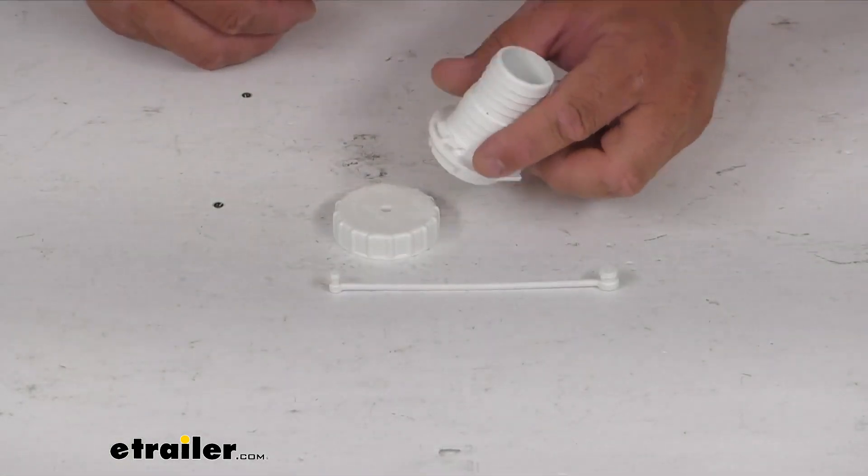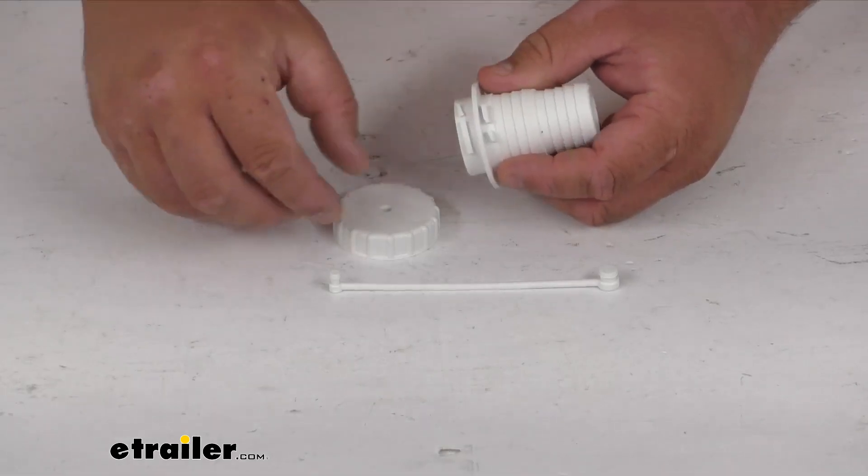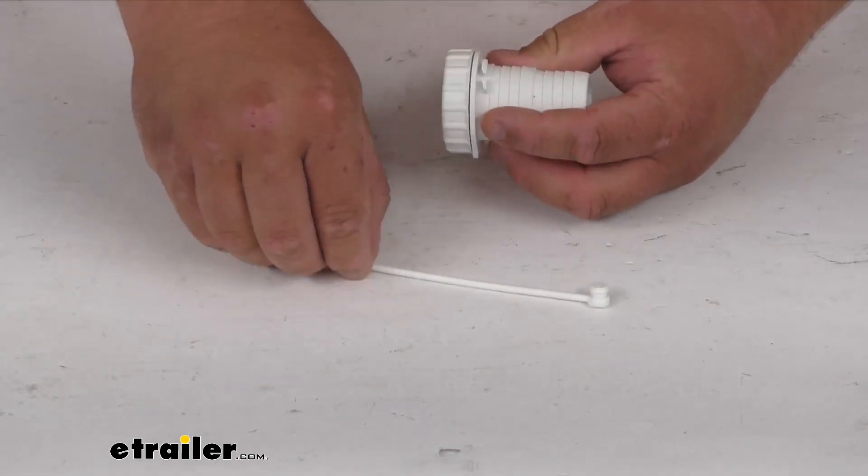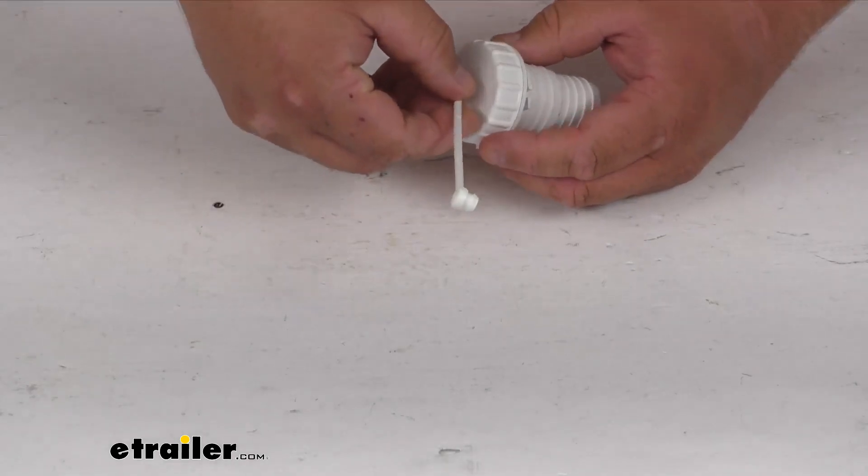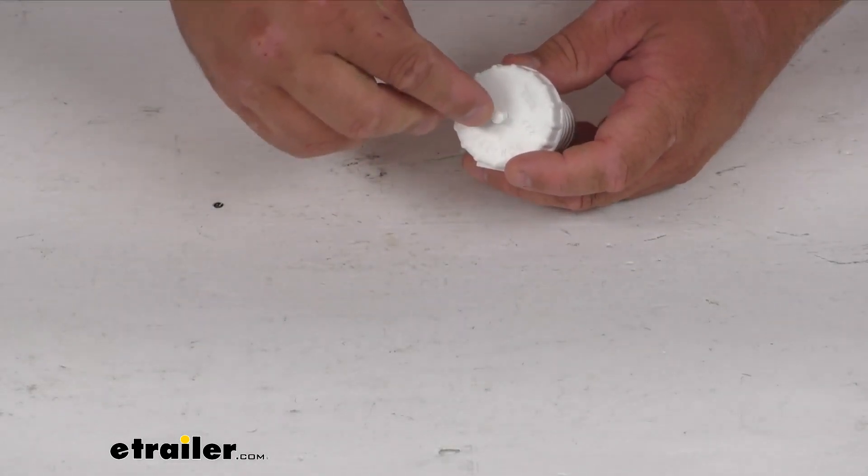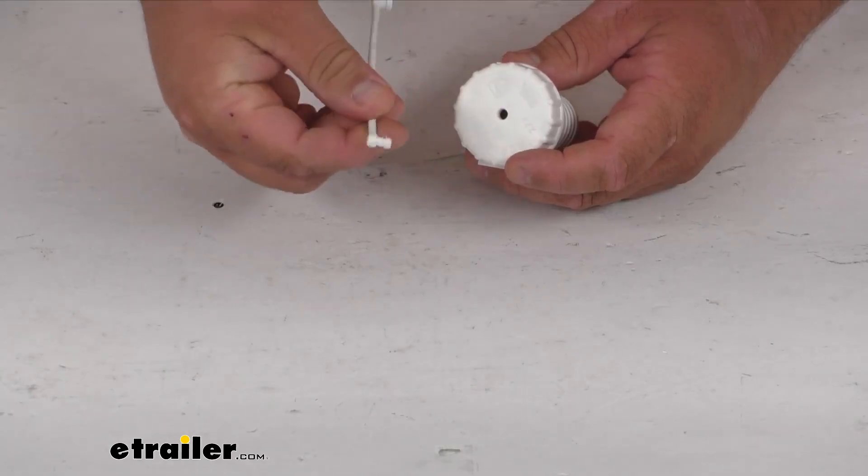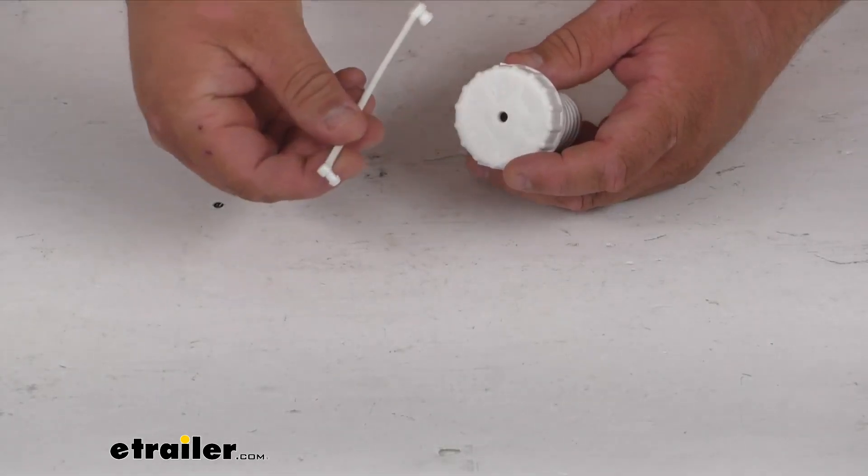It replaces your RV's gravity fill nozzle cap and even the retainer here for the cap. You would simply push this in. Once you pop it in, it's not coming back out without breaking, so I'm not pushing it in.